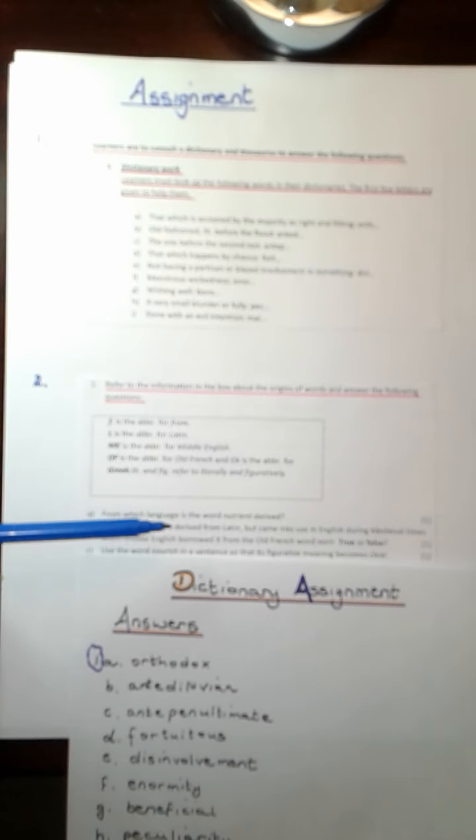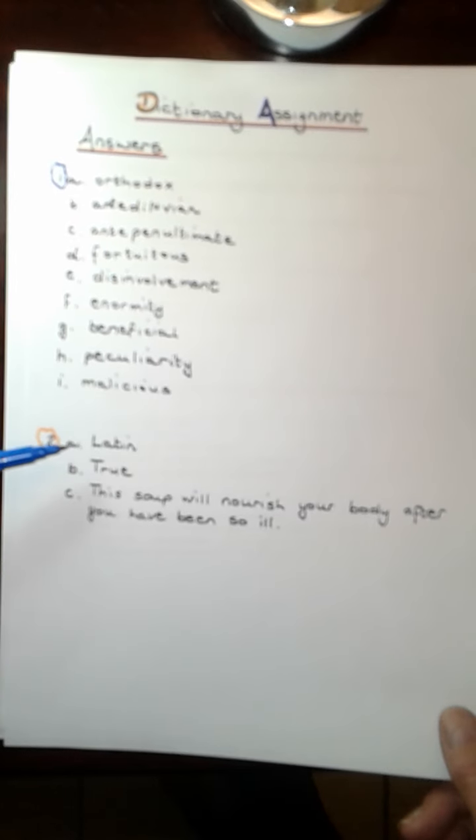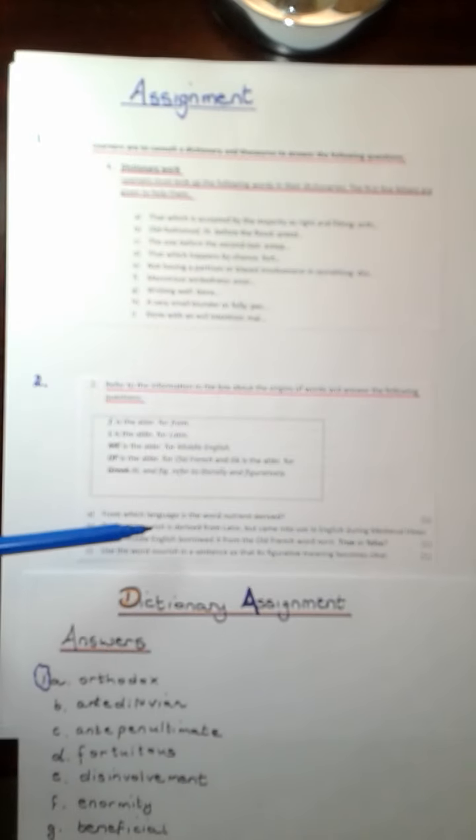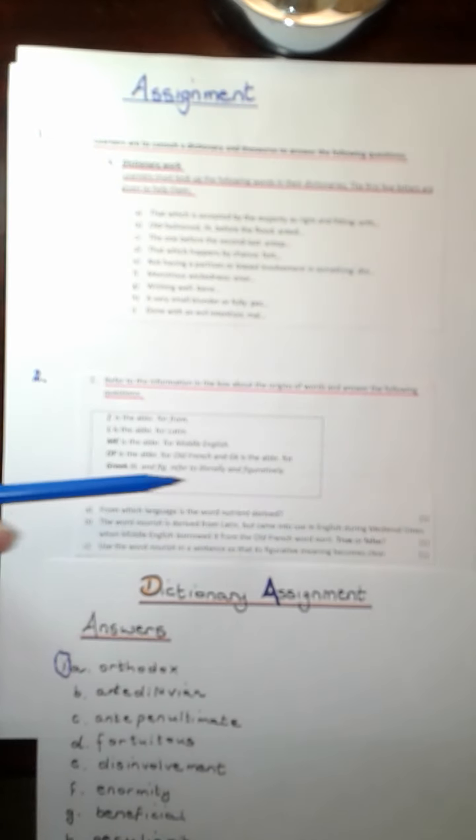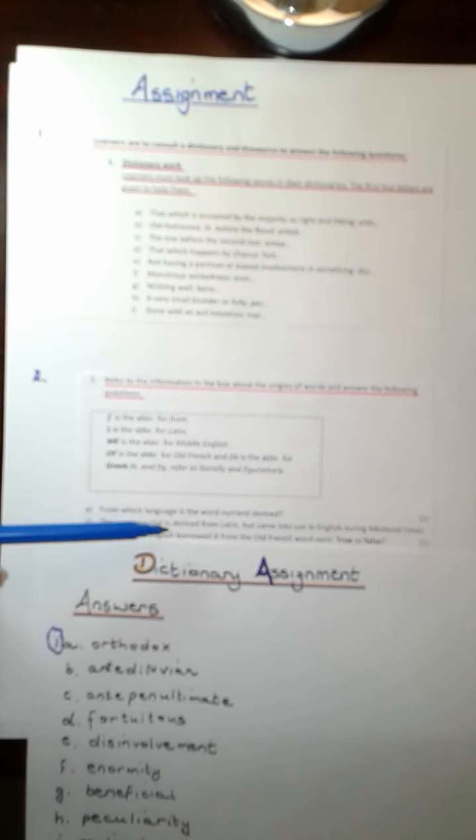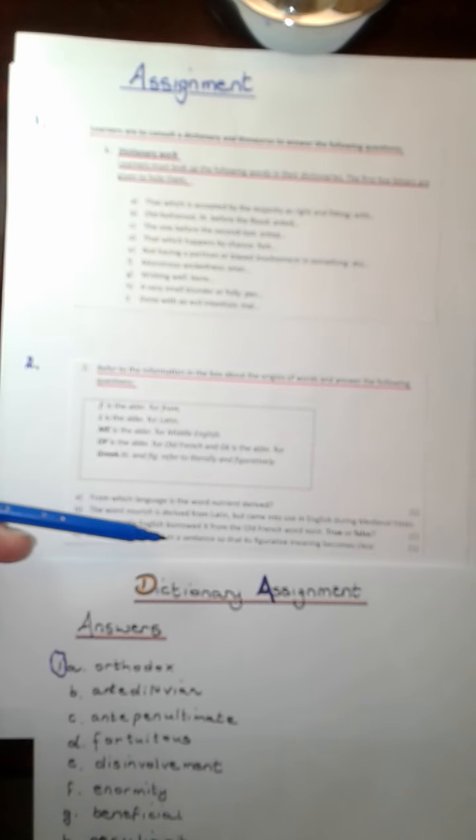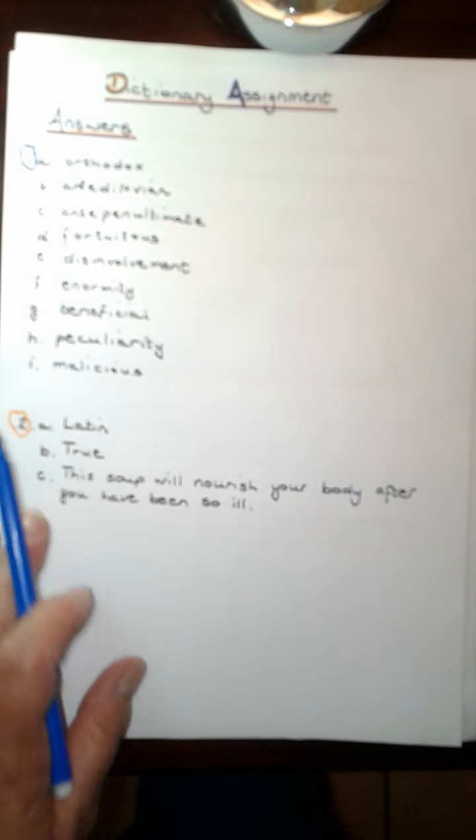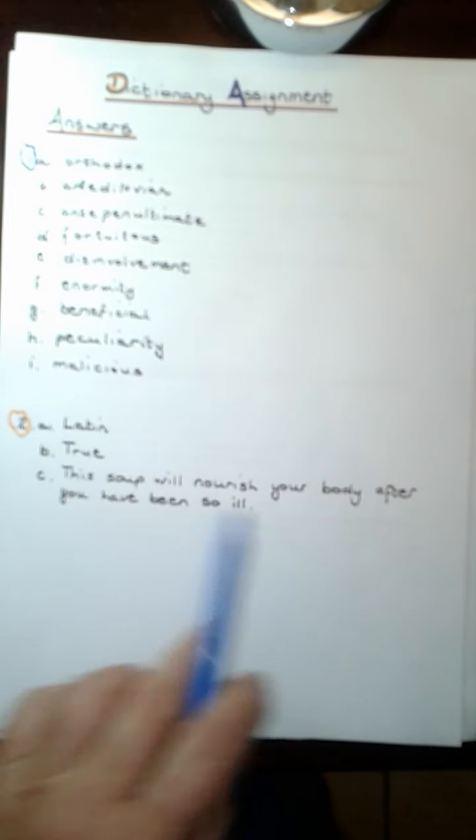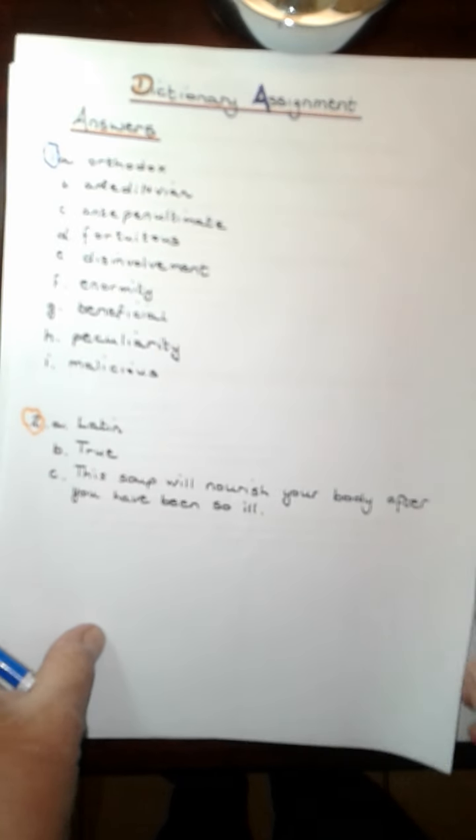Then the next lot: from which language is the word nourish derived from the Latin language. Then the word nourish is derived from Latin but came into use in English during medieval times when Middle English borrowed it from the old French word nourir. Is that true or false? The answer is true. And then the last one, use the word nourish in a sentence so that its figurative meaning becomes clear. That part I misread but I gave you a sentence so that it will come clear. The soup will nourish your body after you have been so ill. I will get back to you on the figurative one. Goodness, this lockdown is getting to all of us.